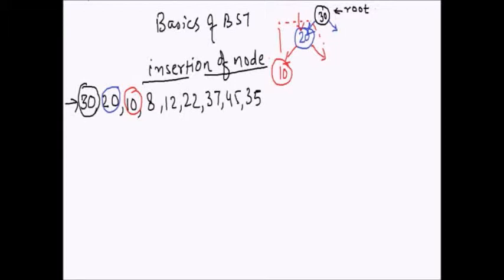Now let's say I want to insert 8. 30 is greater than 8, so it has to be on the left hand side. We come down to 20; 20 is again greater than 8, so it has to be on the left hand side. But the left hand side is already occupied, so we go down to 10. 10 is also greater than 8, so it has to be on the left hand side. Since 10's left is free, we attach that node to the left side of 10.